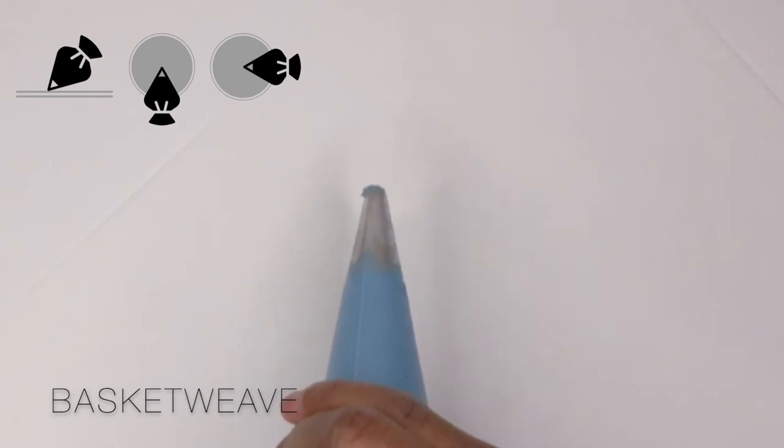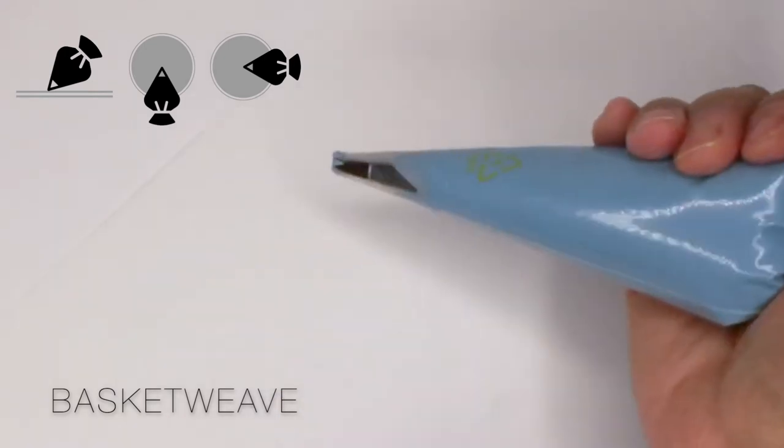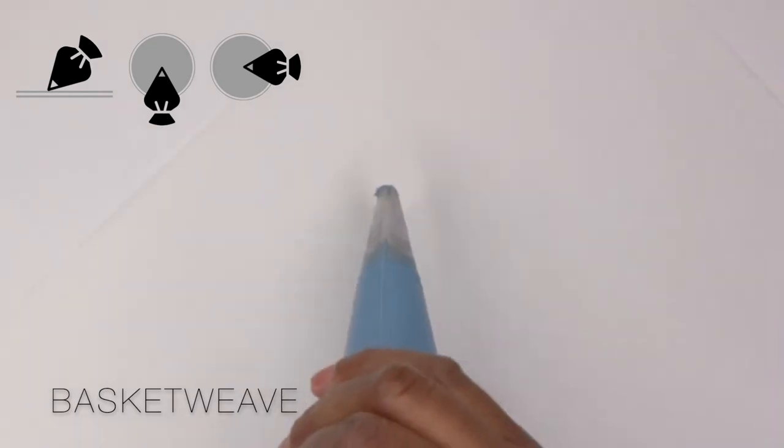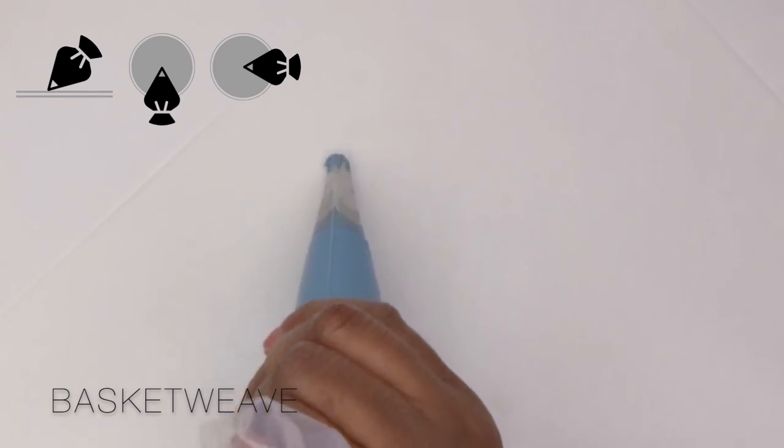Now for our third and final technique, the basket weave. We're going to be holding our hand in two different positions for this technique. First, we're going to be at a 45 degree angle with the end of our bag facing our body for the vertical lines, and for the horizontal lines we'll hold our bag at a three o'clock position if you're right-handed and nine o'clock position if you're left-handed. First, we're going to start by piping a vertical line.